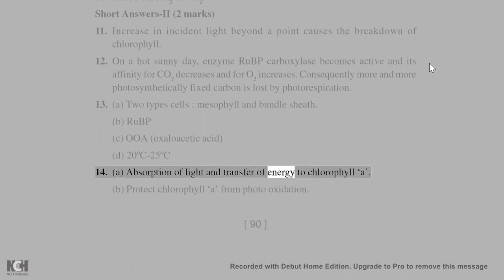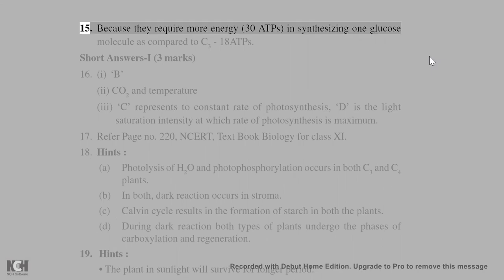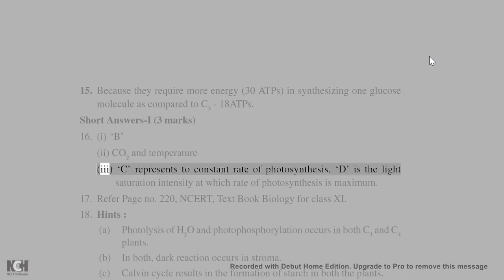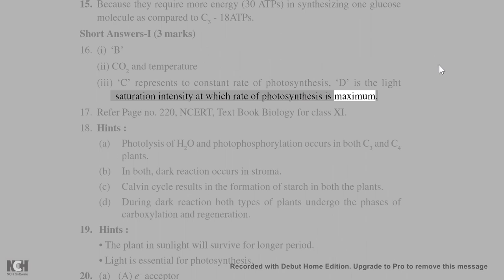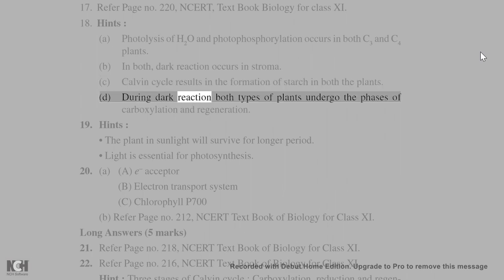14. (a) Absorption of light and transfer of energy to chlorophyll A. (b) Protect chlorophyll A from photo-oxidation. 15. Because they require more energy (30 ATPs) in synthesizing one glucose molecule as compared to C3 (18 ATPs). Short answers 1 (3 marks): 16. (i) B. (ii) CO₂ and temperature. (iii) C represents constant rate of photosynthesis; D is the light saturation intensity at which rate of photosynthesis is maximum. 17. Refer page number 200. 18. Hints: (a) Photolysis of H₂O and photophosphorylation occurs in both C3 and C4 plants. (b) In both, dark reaction occurs in stroma. (c) Calvin cycle results in the formation of starch in both the plants. (d) During dark reaction both types of plants undergo the phases of carboxylation and regeneration.